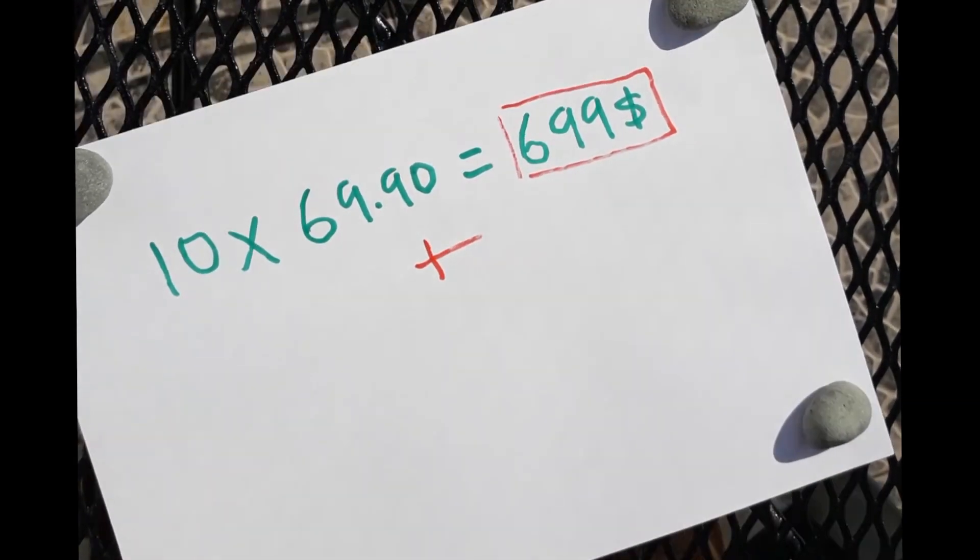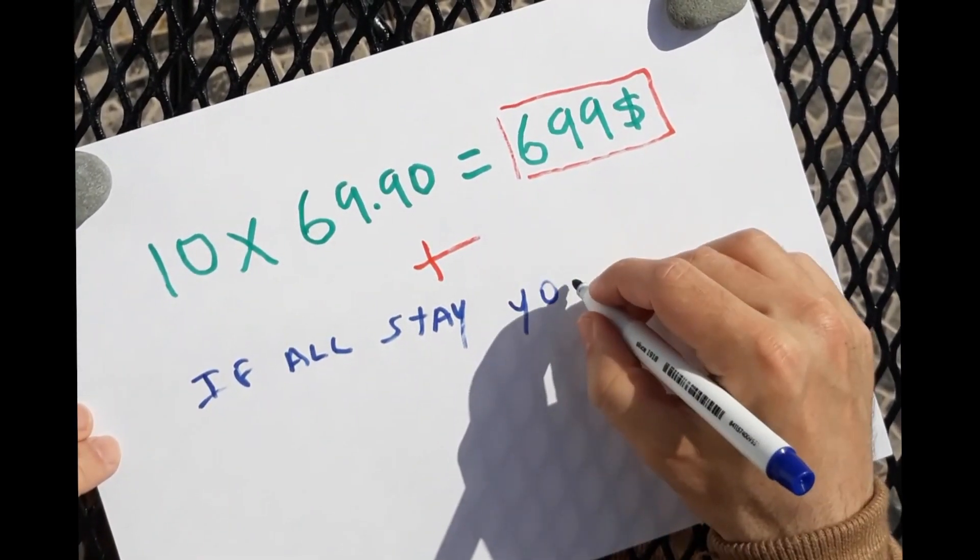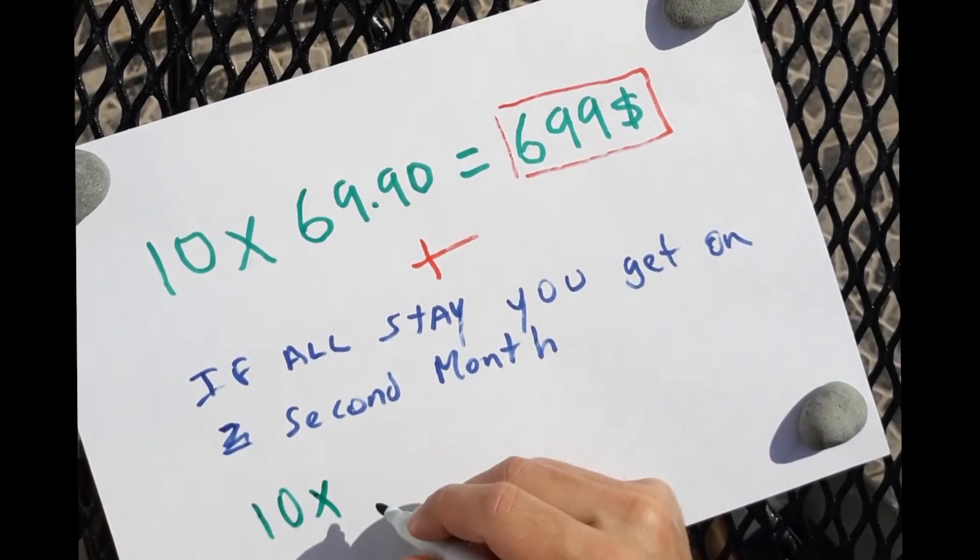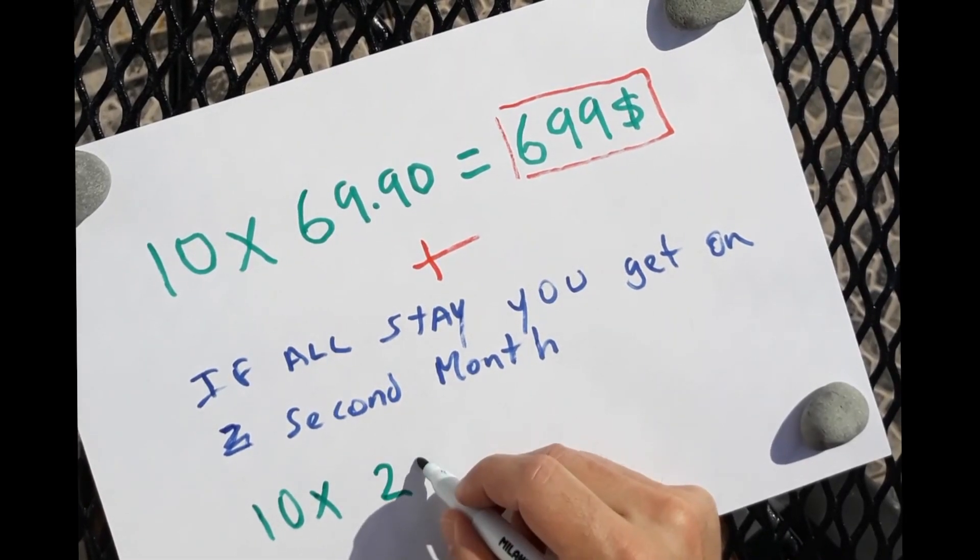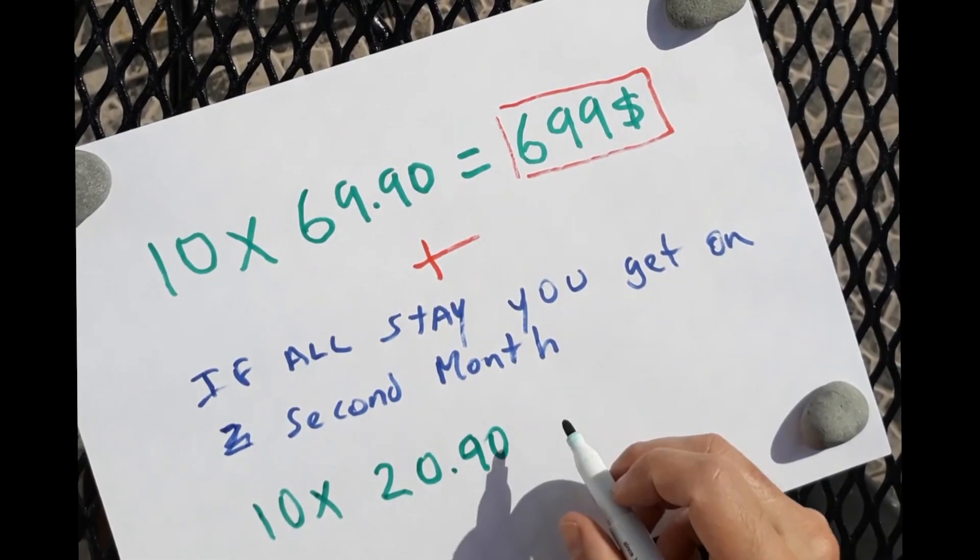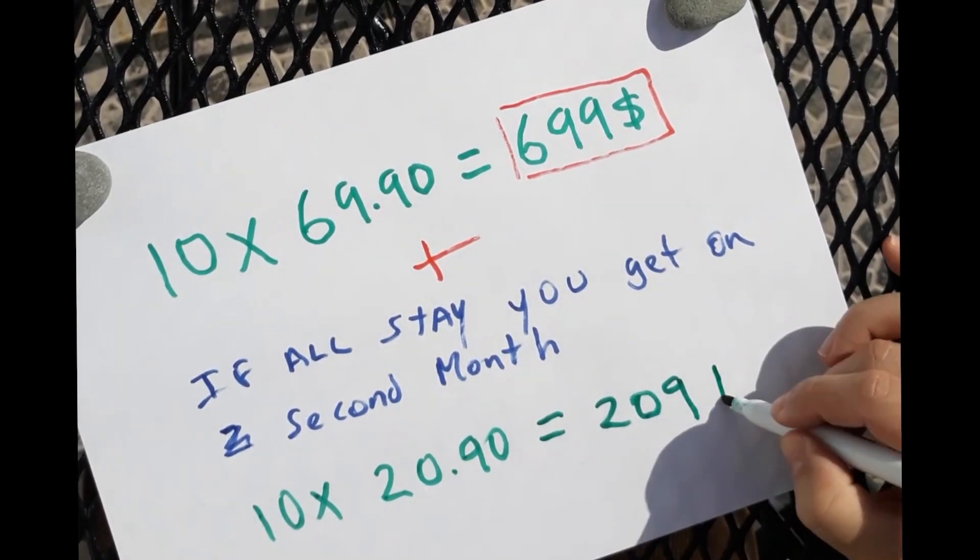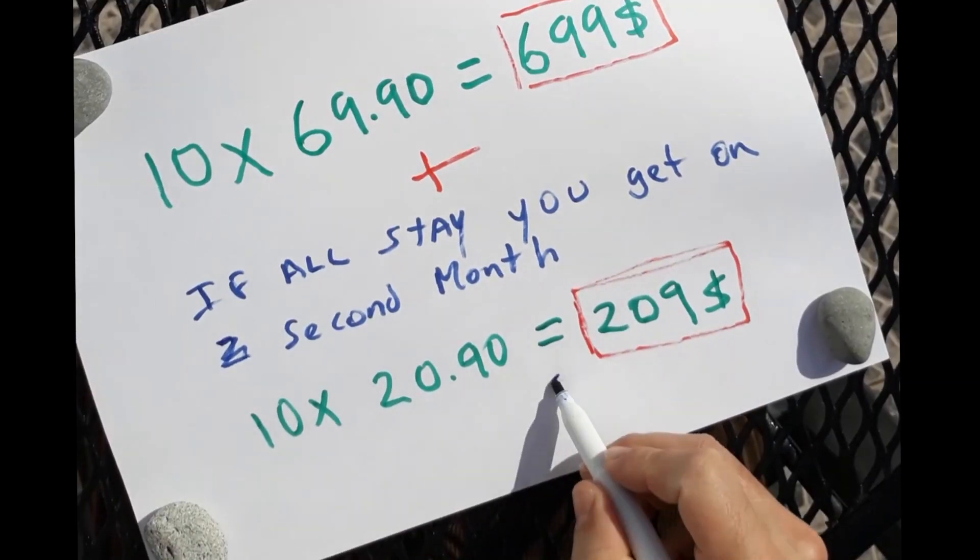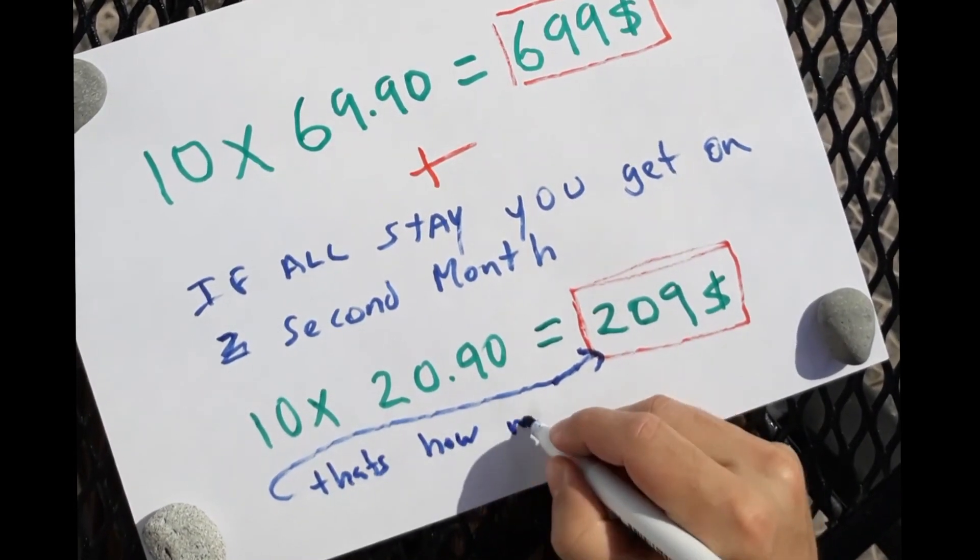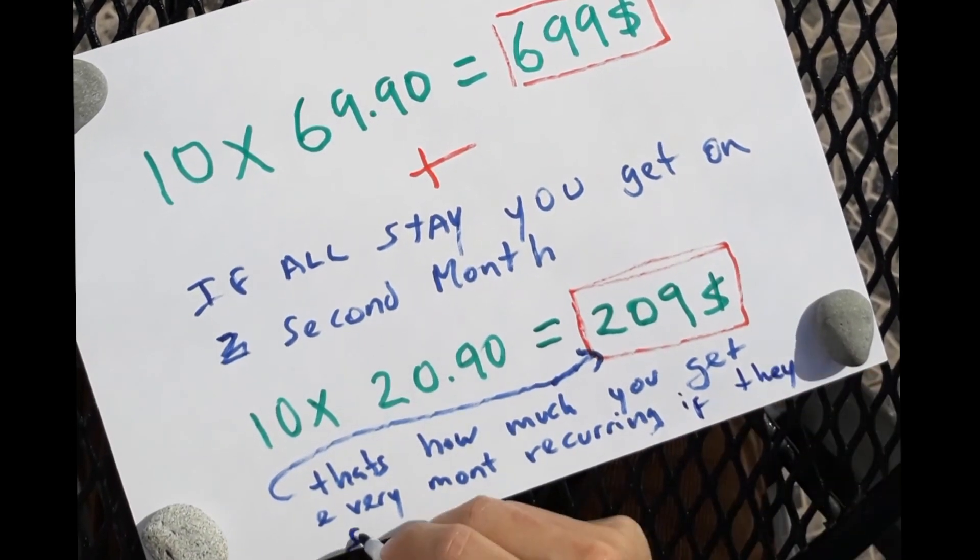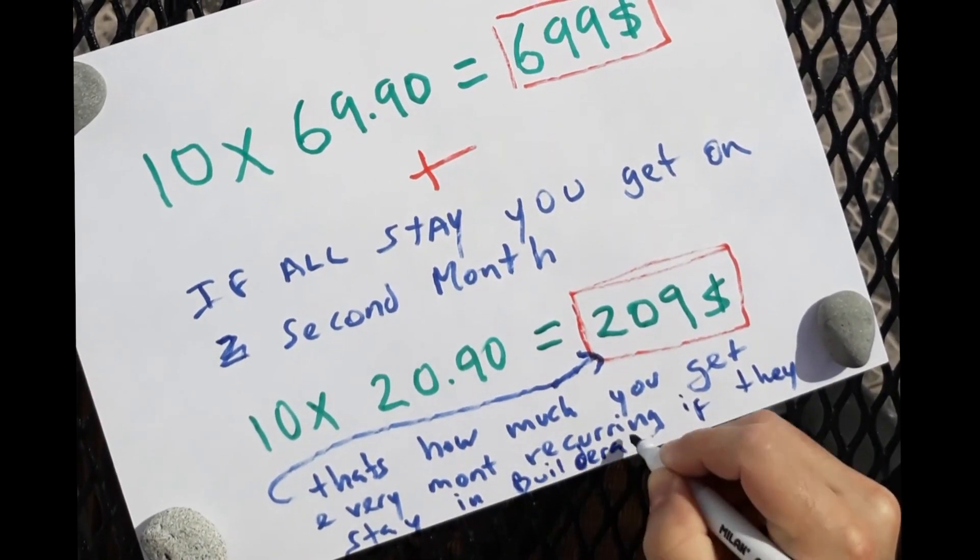Plus, if all stay, you get on the second month 10 people times $20.90, which equals $209. And that's how much you get every month recurring if they stay in Builderall.